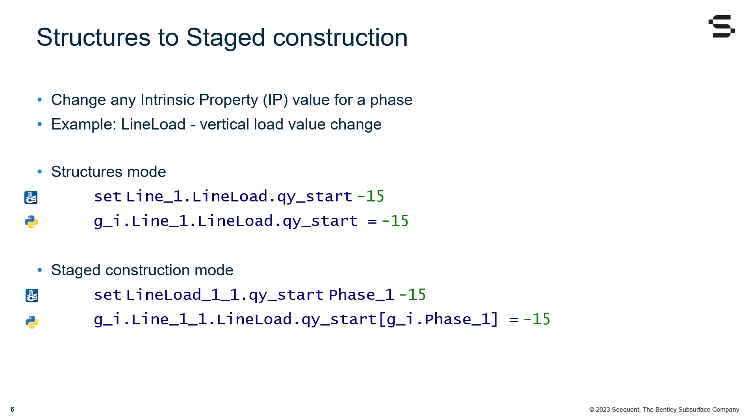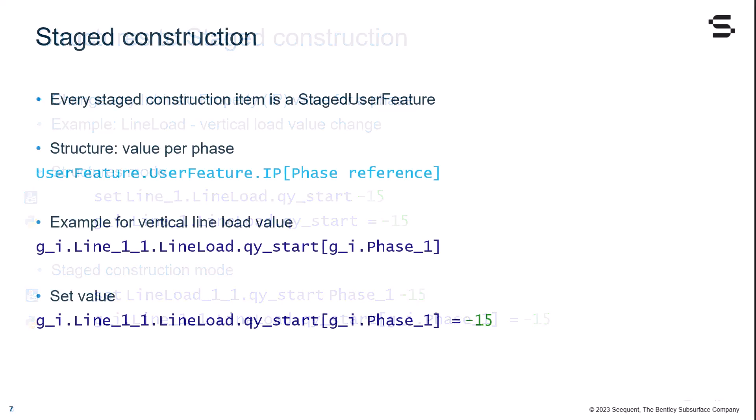For the following slides, I will only refer to the Python commands used. In Plaxis, when our model is in staged construction, every item is a staged user feature, which means that each configuration corresponds to a specific phase. The structure of the command when you want to change a value per phase is UserFeature.userFeature.ip[Phase reference].